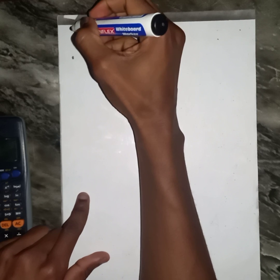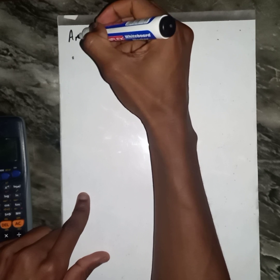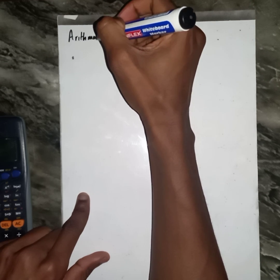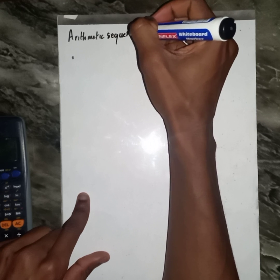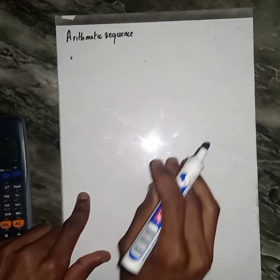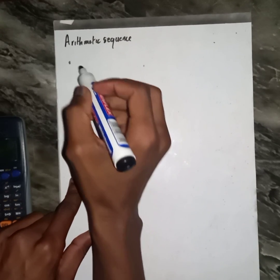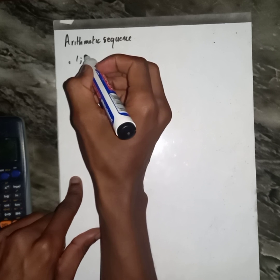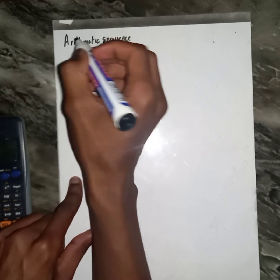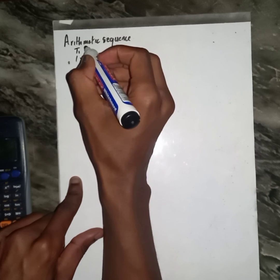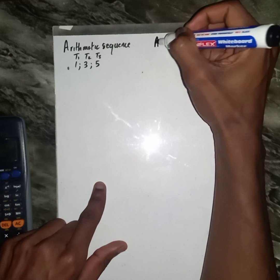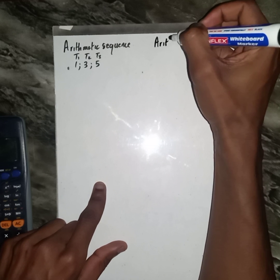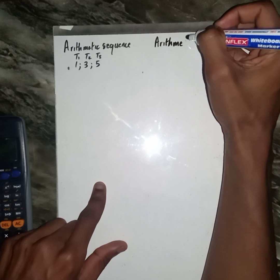Good day, fellow socials. Do you still remember last time we said we have the arithmetic sequence? Sequence. Then we said it looks like this. Let's say if we have one somewhere here, three together with five. Then we know that this one is term one, term two, then this one is term three.